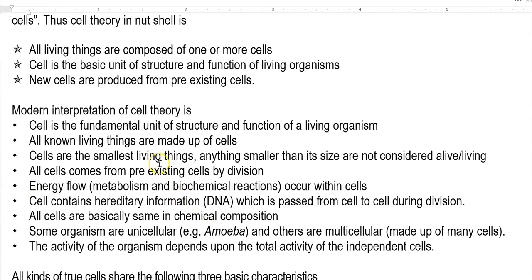Cells are the smallest living things. Anything smaller than a cell's size is not considered alive or living — the smallest living organism on earth is just a cell. All cells come from pre-existing cells by division: first a cell is present, and when that particular cell divides, new cells are formed.